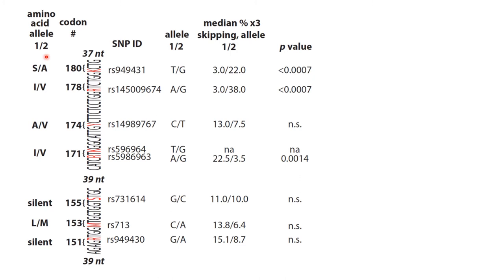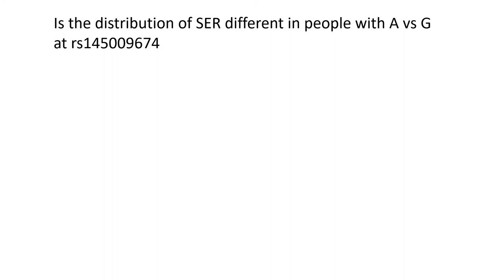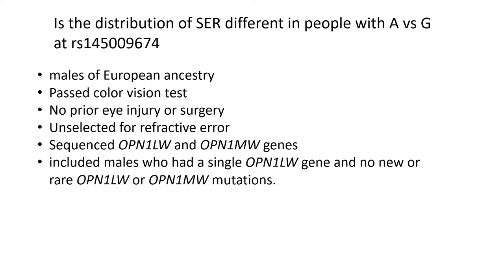This is the sequence of exon 3 and here are the amino acids at each position. We label them one and two, these are the SNP IDs, then the nucleotides at allele one and two, the percent exon 3 skipping for allele one and two, and then here these are the Bonferroni corrected p-values. We found three different positions: the nucleotide polymorphism in codon 180, in codon 178, and in codon 171 are all having a significant effect on exon 3 splicing. For our next analysis we focused on the one in codon 178, because this particular nucleotide polymorphism has a nearly 13-fold effect on exon 3 skipping, with 13 times as much skipping for variants with G versus those with A. So the question is: is the distribution of spherical equivalent refraction different in people with A versus G at the codon 178 SNP?